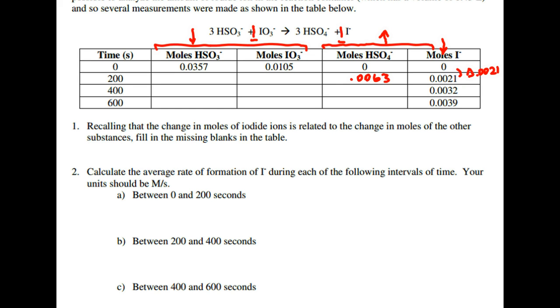For IO3 minus, because it has the same coefficient, the change in should be the same. And remember that because this is a reactant, it's going down. So it would be 0.01105 minus 0.0021. And that should give you 0.0084. And then the same for HSO3 minus, but instead of 0.0021, it would be 0.0021 times 3. And then you would subtract that number from 0.0357. So it would be 0.0294.